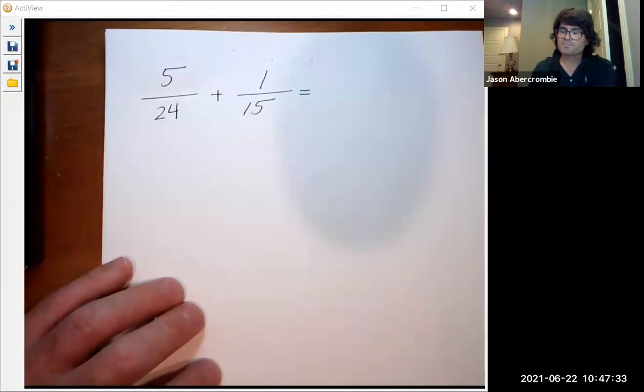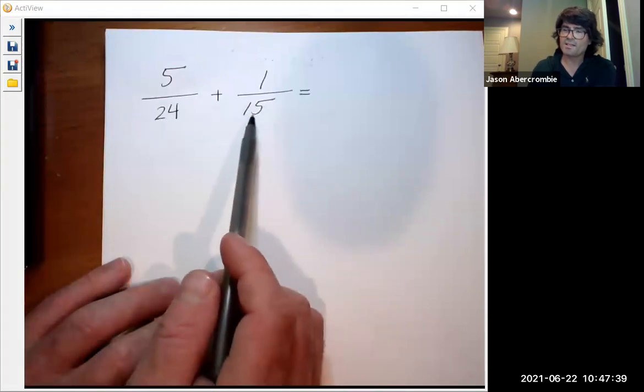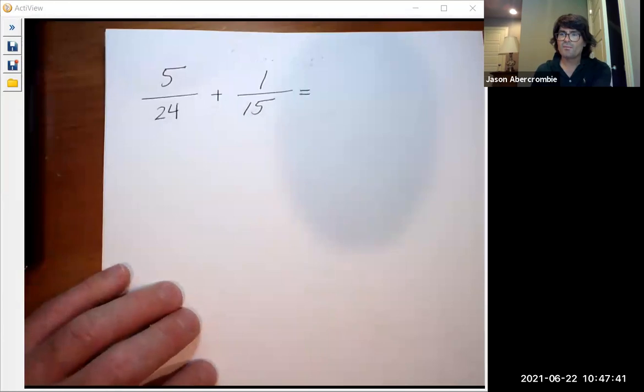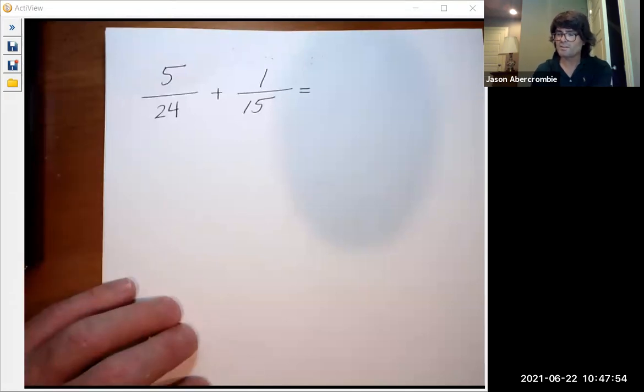And they already have that in common. 24 is actually eight times three, and 15 is five times three. So the fact that they have a common number that goes into both of them, that tells me that there's going to be a number that both of them go into that's a little bit easier to work with than 24 times 15.